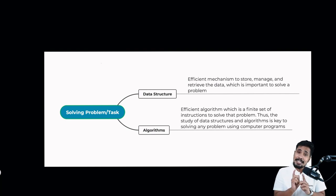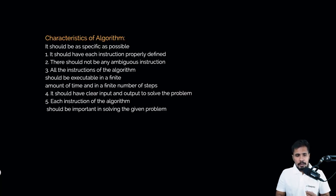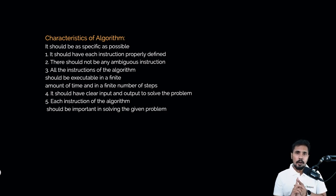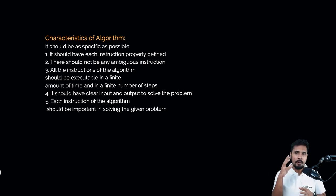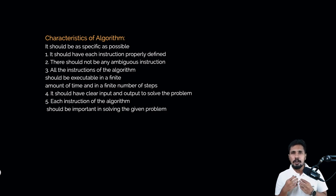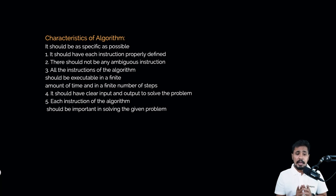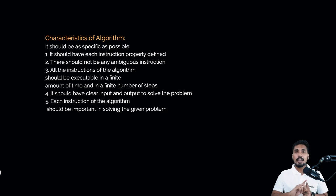Now let's get into characteristics of an algorithm. When you say you've designed a good algorithm, what makes it good? The algorithm needs to solve a specific problem, and each instruction must be properly defined. You should not have ambiguous instructions — no wasteful or unnecessary instructions. All instructions must be executable in a finite amount of time and a finite number of steps, with clear input and output, and each instruction should be important to solving the problem.